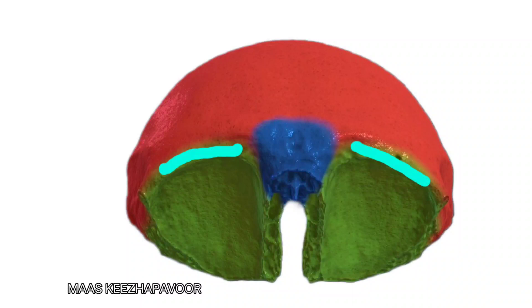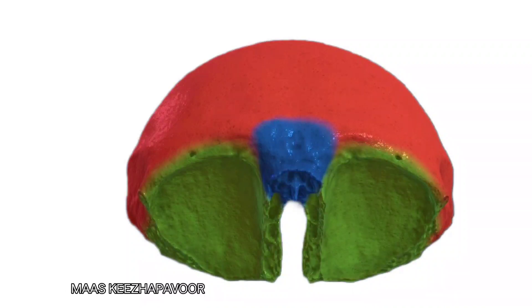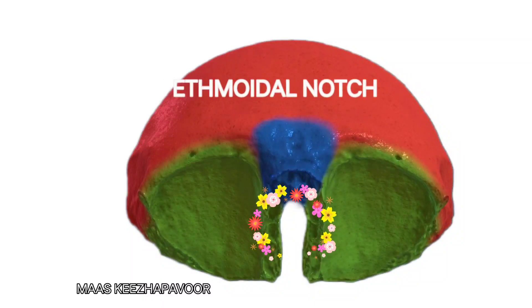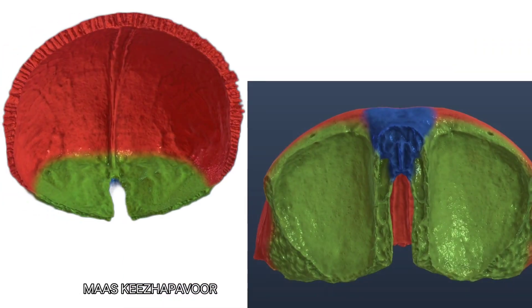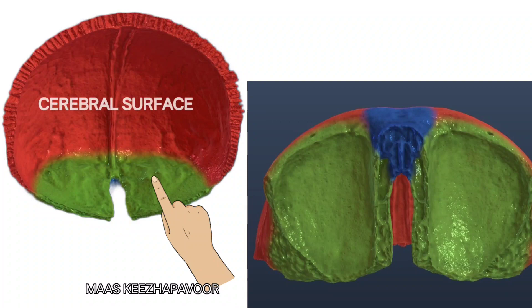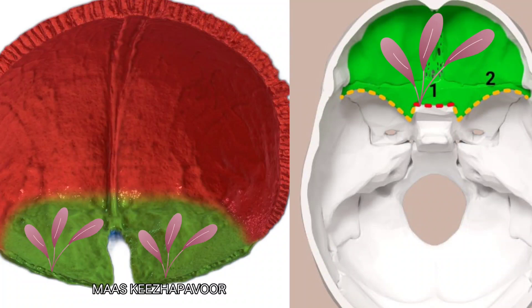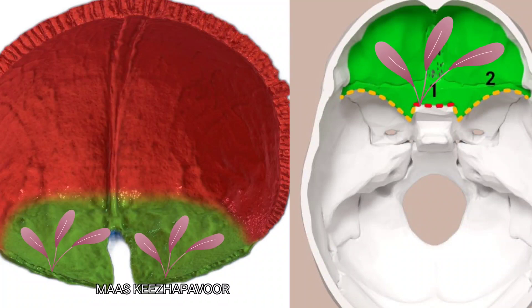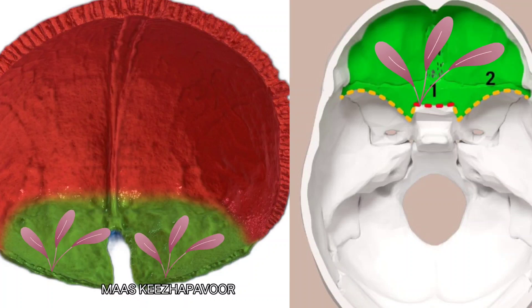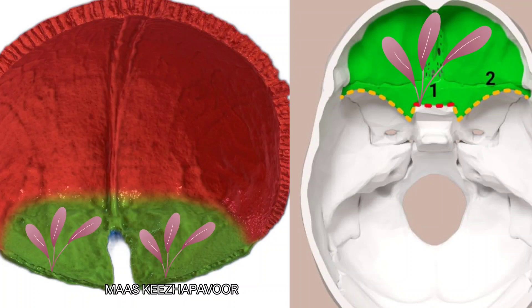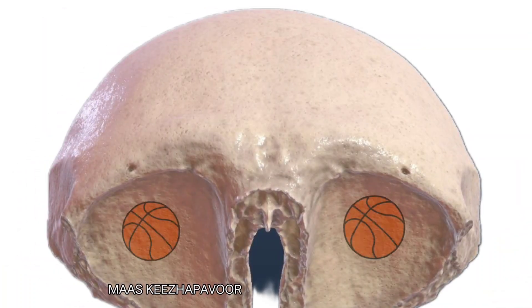The orbital plates are triangular curved plates extending horizontally backwards from the supraorbital margin. These plates are separated from each other by a U-shaped ethmoidal notch, which articulates with the cribriform plate of the ethmoid bone. The orbital plate has two surfaces: the cerebral surface and the orbital surface. The cerebral surface forms the floor of the anterior cranial fossa and is irregular with ridges, lodging the sulci and gyri of the frontal lobe of the cerebrum.